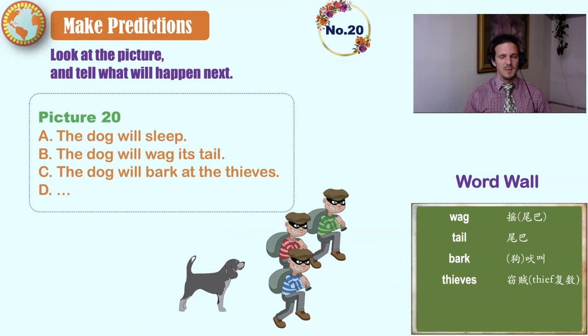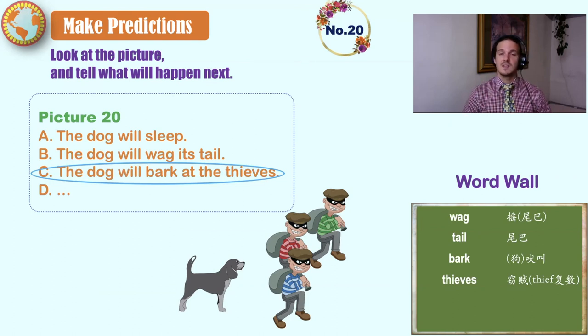There are three men with masks and bags full of who knows what. The dog isn't happy and is looking at them. The dog will bark at the thieves. They are taking things that don't belong to them. And the dog will sound the alarm. Ruff, ruff.